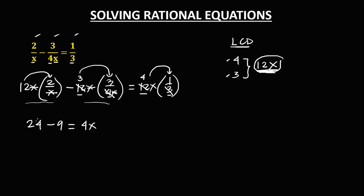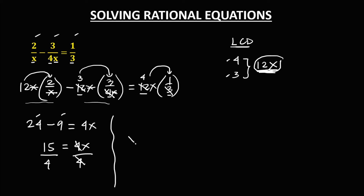Then simplify: 24 minus 9 equals 15, so we have 15 equals 4x. To solve for x, divide both sides by 4. Therefore, x equals 15 over 4. So this is the solution of these rational equations.